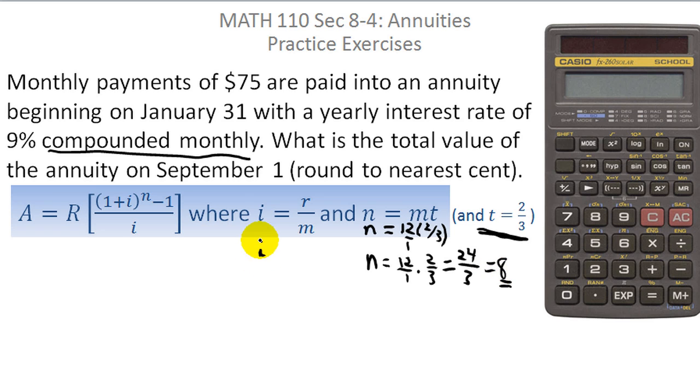i is r over m. Remember, r is the annual interest rate. It's 9%, so that would be 0.09. And we've already decided that m is 12, so it would be divided by 12. So we know n and we're about to find i. So you take your calculator. And I'll carry through the steps this time just so you can see them. You take 0.09 divided by 12 equals.